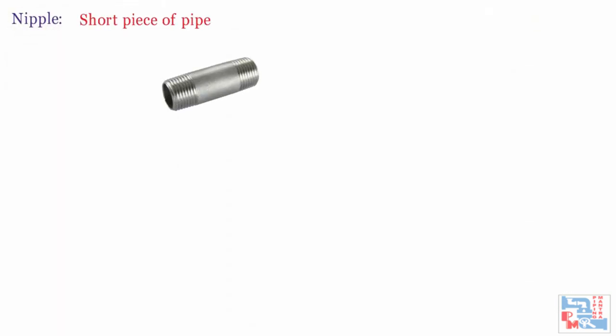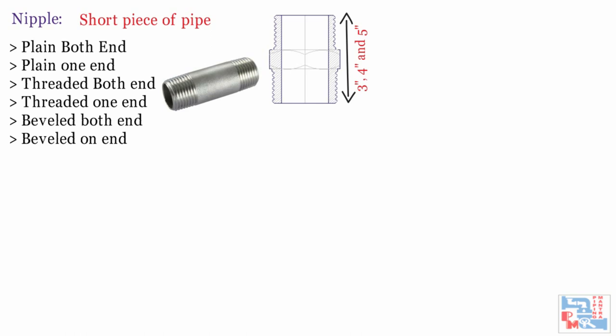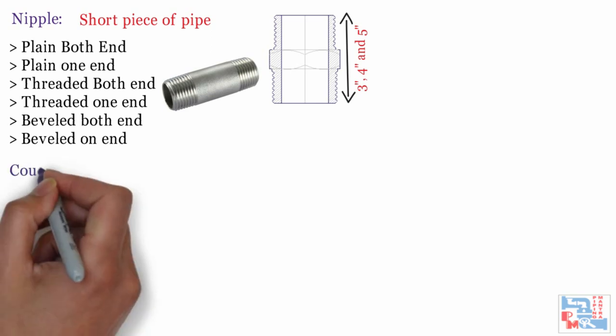A nipple is a short piece of pipe usually defined with different end connections, like plain both-end, plain one-end, threaded both-end, threaded one-end, beveled both-end, beveled one-end, and combinations such as one-end plain and one-end threaded. The length of the nipple is usually specified by the overall length including threads. It is usually available in 3-inch, 4-inch, and 5-inch sizes.